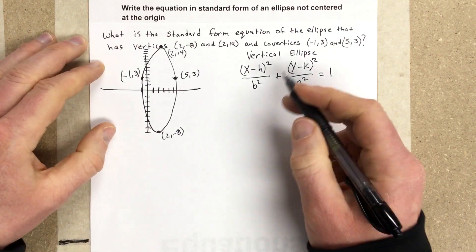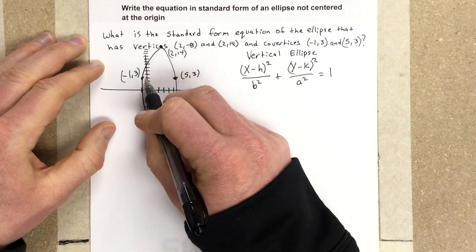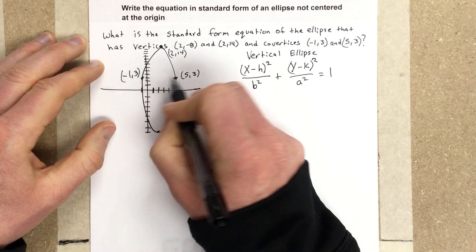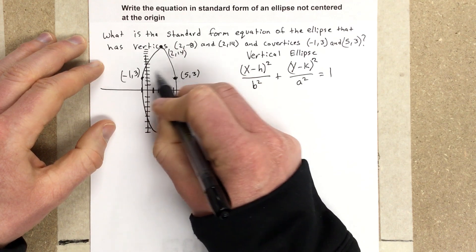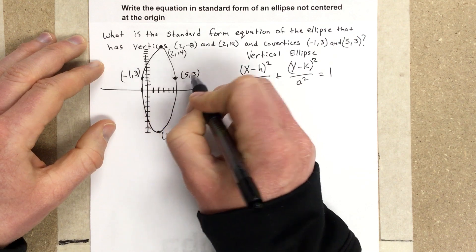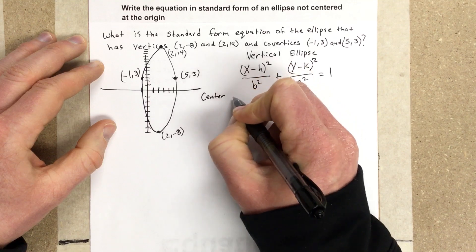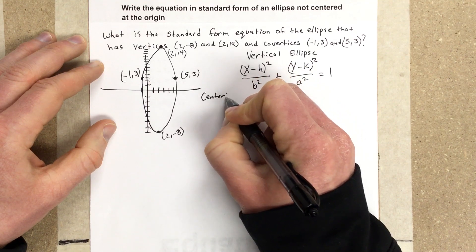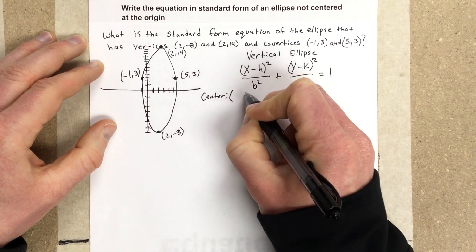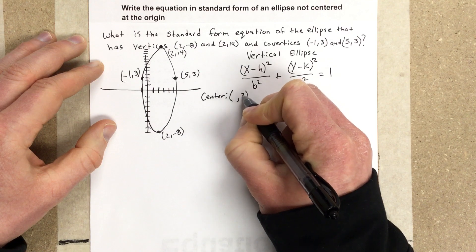Our co-vertices give us the y-value of the center. So the y-value of the center is 3. So we got center and the y-value would be 3.